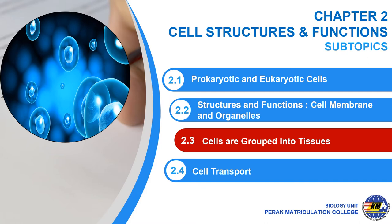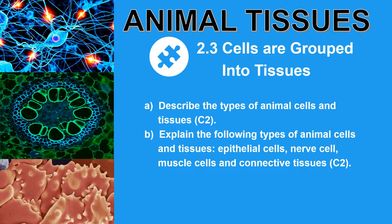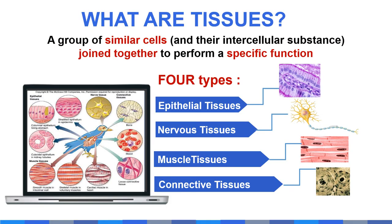In Subtopic 2.3, we will explore various types of plant and animal tissues. There are two learning outcomes for animal tissues. At the end of the lesson, students should be able to describe and explain the four types of animal tissues: epithelial tissues, nerve tissues, muscle tissues, and connective tissues. Tissue is defined as a group of similar cells that are joined together for a specific function.